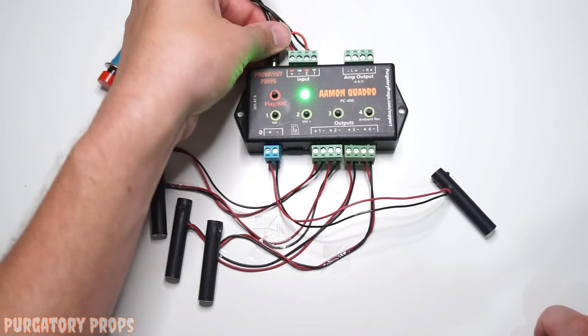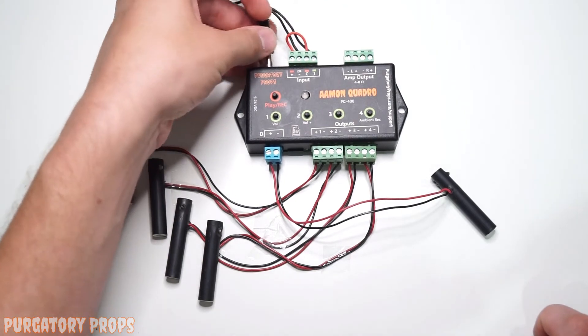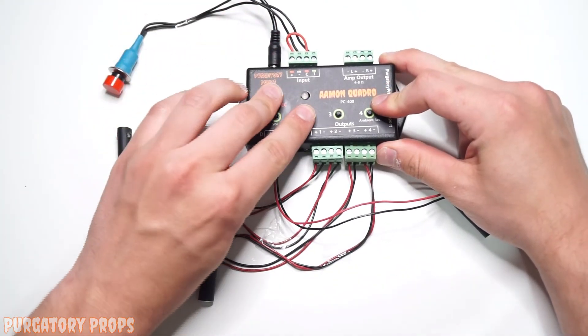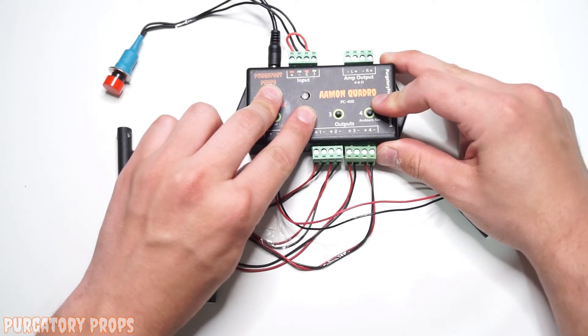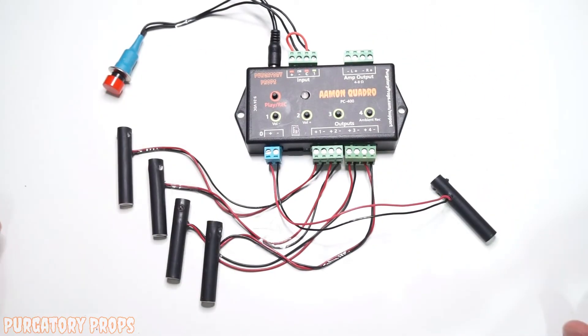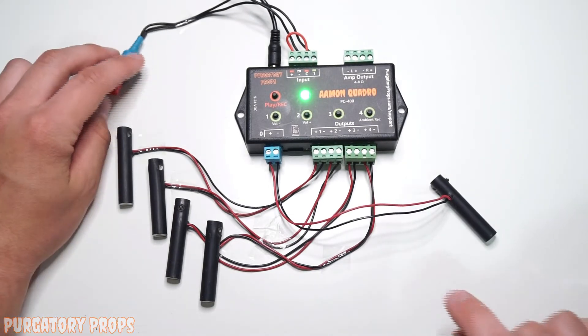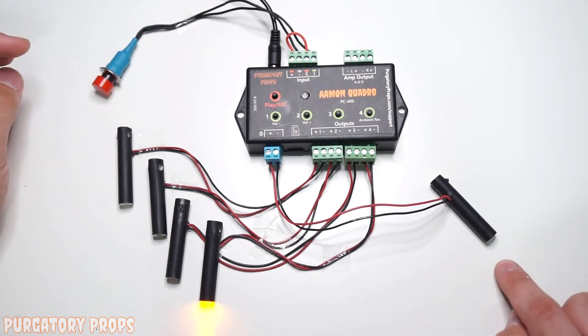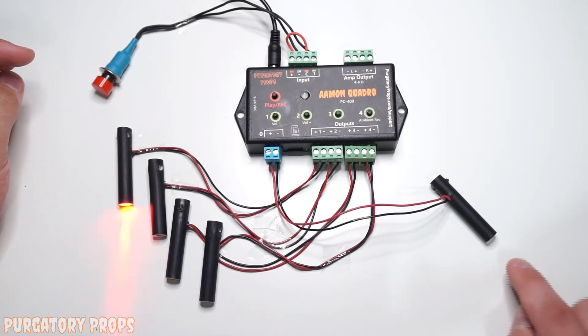It also has a couple different modes. If we unplug the Amon Quadro, plug it back in and hold play record and button 2 until the light turns red. Now this is going to be in start mode. So if we go ahead and trigger, notice that the output 0 is only on for a second at the beginning of the animation.